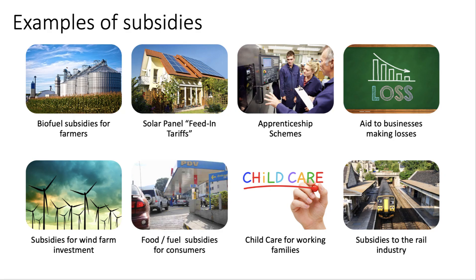There are loads of examples of subsidies that the examiners could focus on. Some of them are subsidies directly to producers — for example, a subsidy for biofuel production, or a subsidy covering some of the costs of apprenticeships, or perhaps state aid to a loss-making business such as steel. Others are increasingly focusing on subsidies to the consumer, including renewable energy, subsidies for childcare (effectively tax-free childcare), and some food and fuel subsidies for certain consumers, particularly in emerging countries.